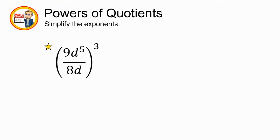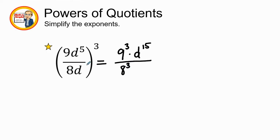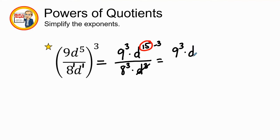Let's try example number three. This seems a little less intimidating, but we still need to remember our basic rules. First, we distribute: nine to the first power times three is nine to the third power, and five times three is 15, so that's d to the 15th power. Over eight to the third power — because eight has an exponent of one, so one times three is three — and d to the first power, so one times three gives us d to the third power.